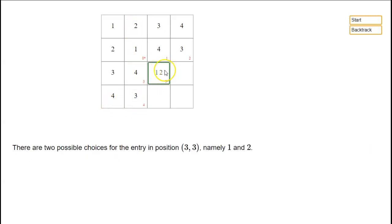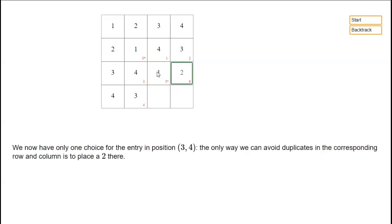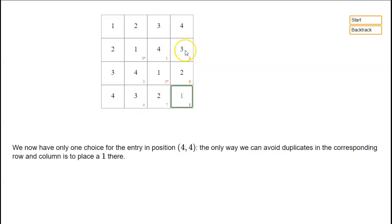Now we go to the next slot and we have a choice again. We can't have a 3 or a 4, but we could have a 1 or a 2. So we put a little star here to remind ourselves there's a choice. We're going to try putting in a 1. Then in the next slot we can't have 1, 3, or 4, so we have to put in a 2. And in the following slot we can't have 1, 3, or 4, so we have to put in a 2 again. And here we can't have 2, 3, or 4, so we have to put in a 1.